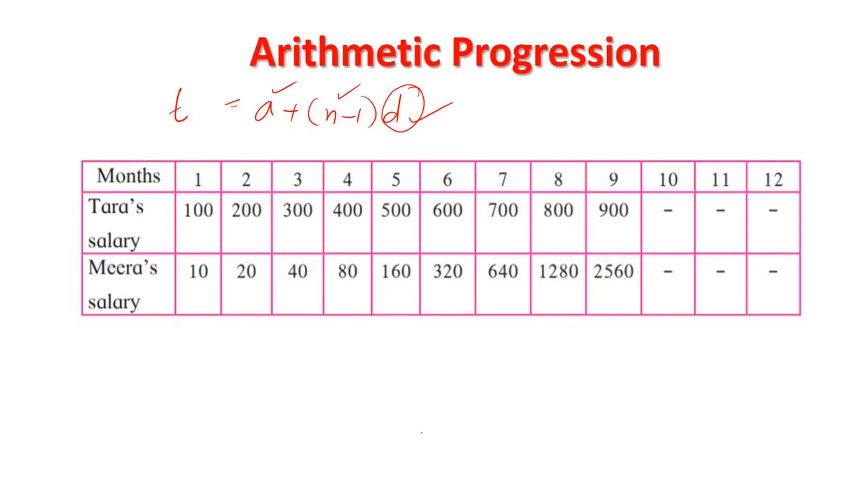Now, you will be learning a little more about arithmetic progression in a more interesting and useful way. On the screen, you can see months are given here: one, two, three months are shown with Tara's salary and Meera's salary. These Tara and Meera are teachers in your textbook. And this 100, 200, 10, 20, all these are their salary, not in rupees, in gold coins.